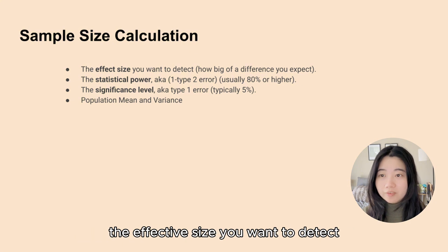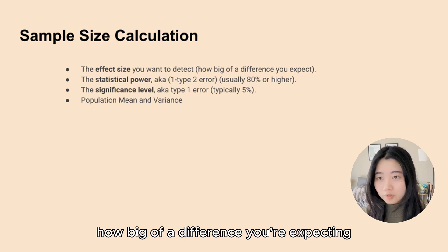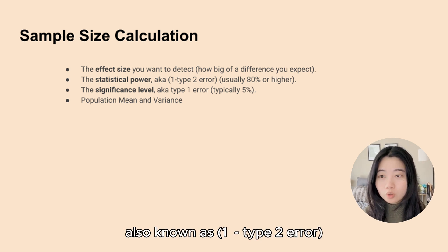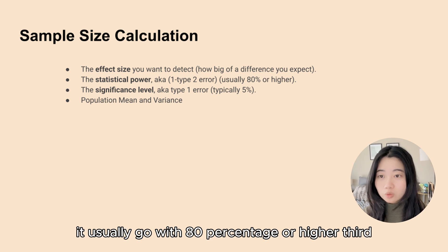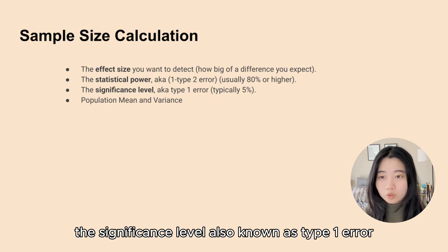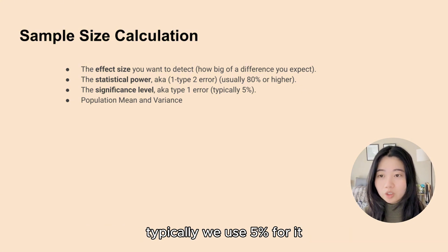The first is the effect size — how big of a difference you're expecting to detect. The second is statistical power, also known as 1 minus type 2 error, which usually goes with 80% or higher. Third is the significance level, also known as type 1 error — typically we use 5% for it.